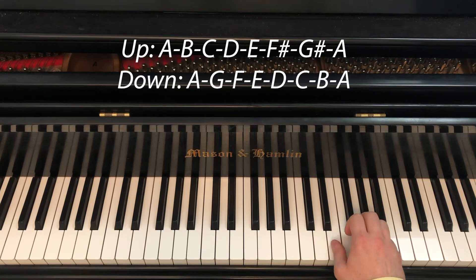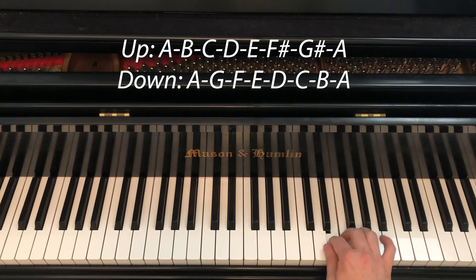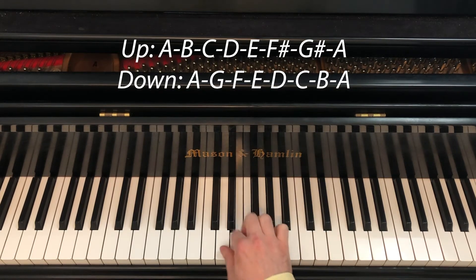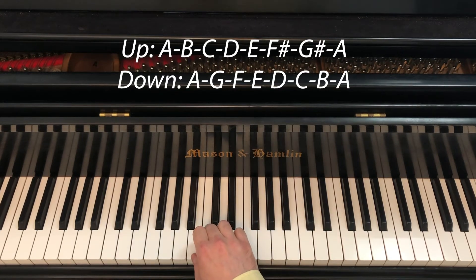Coming down, all white keys, 5 4 3 2 1. So the 4th finger plays G, 3rd finger plays F, 4th finger plays E, 3rd finger plays D.